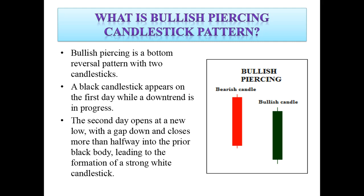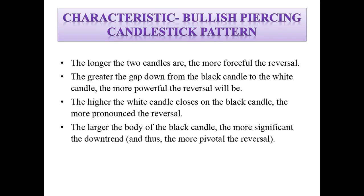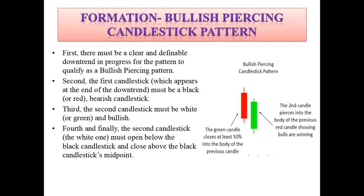This leads to the formation of a strong white or green candle. As for the characteristics: the longer the two candlesticks are, the more forceful the reversal. The greater the gap down from the black candle to the white candle, the more powerful the reversal will be. The higher the white candle closes on the black candle, the more pronounced the reversal. The larger the body of the black or red candle, the more significant the downtrend and thus the more pivotal the reversal.